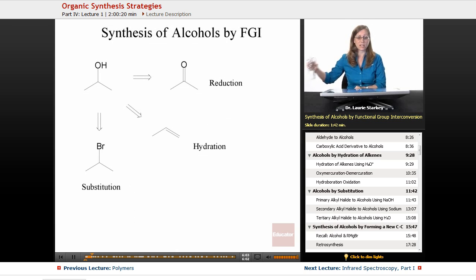So for example, if we wanted to synthesize an alcohol, what we want to ask is what reactions have we seen that give alcohols as products? One way we can do that, many reactions we've seen, are called functional group interconversions, or FGIs for short. In other words, not changing the carbon chain at all, just swapping out one functional group for another.